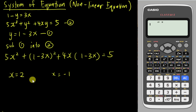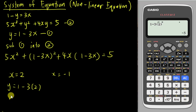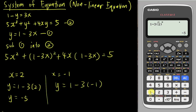To find y, recall that y = 1 minus 3x. When x = 2, type 1 minus 3 times 2 — the calculator gives negative 5. So y = −5. For x = −1, type 1 minus 3 times negative 1, and the calculator gives 4. So y = 4.